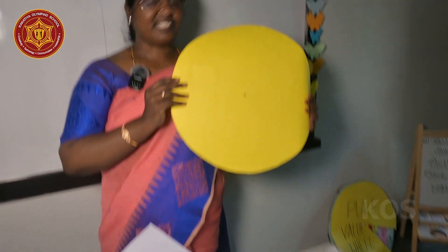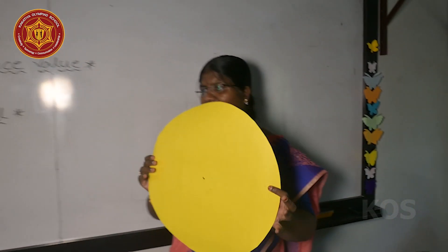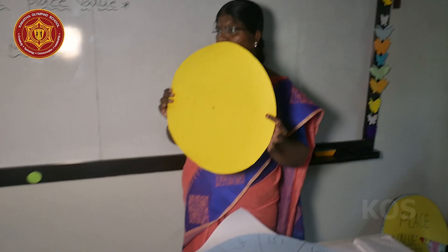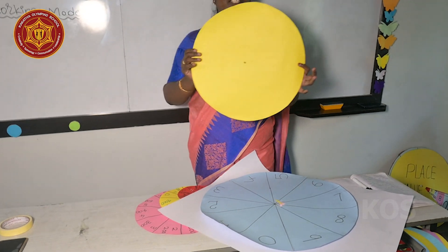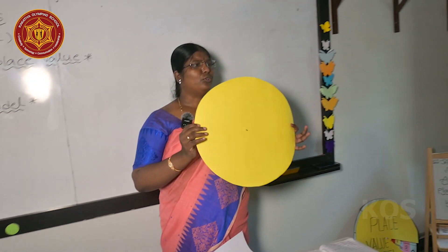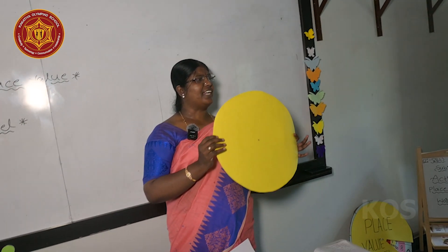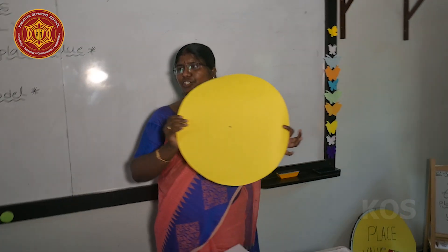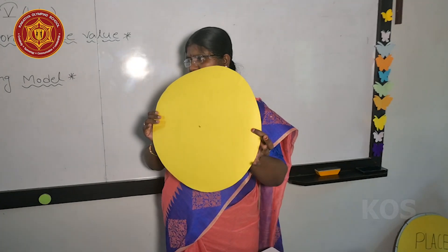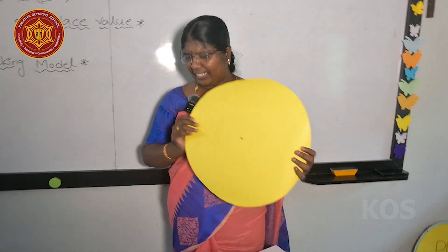Cut into circles like this in different radii. They will give 5 charts to you. You have to cut these charts into 5 circles of different radii.